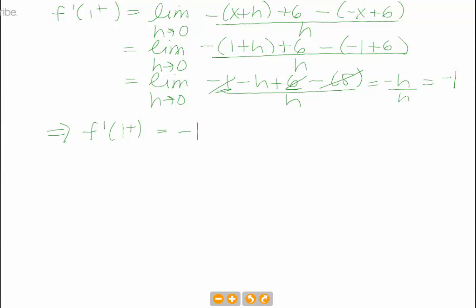So we know that the derivative coming in from the right is negative 1, and the derivative coming in from the left is 2.